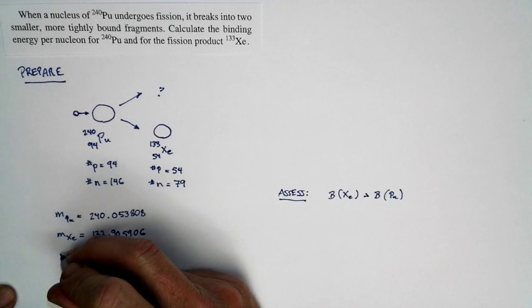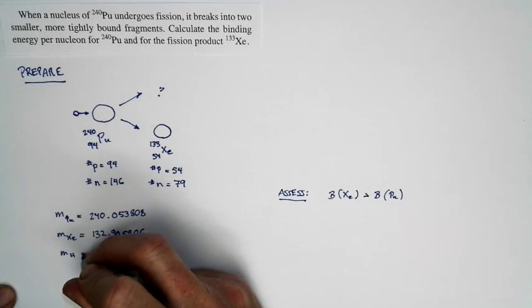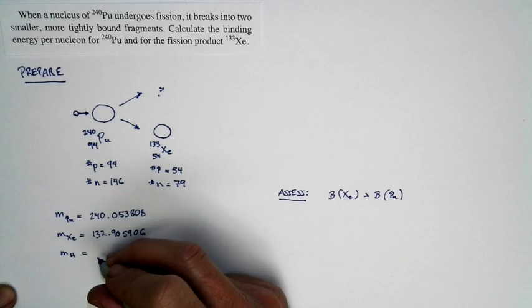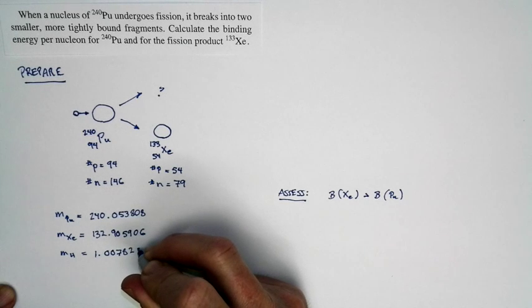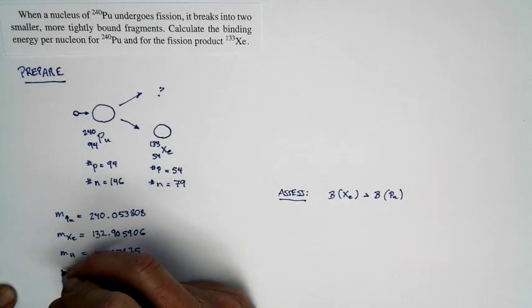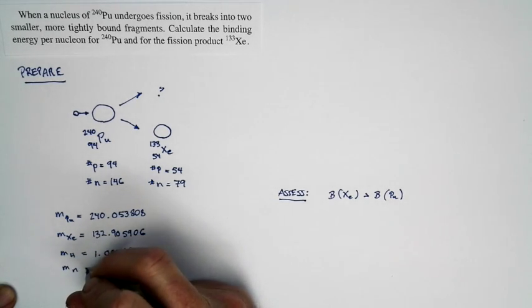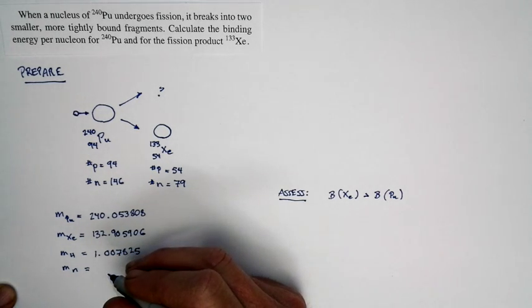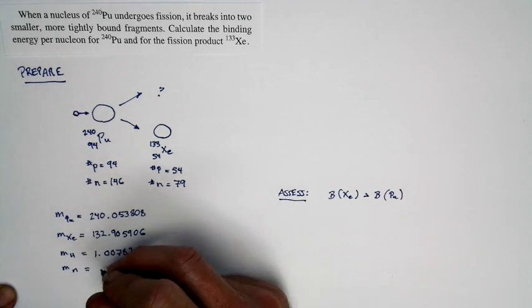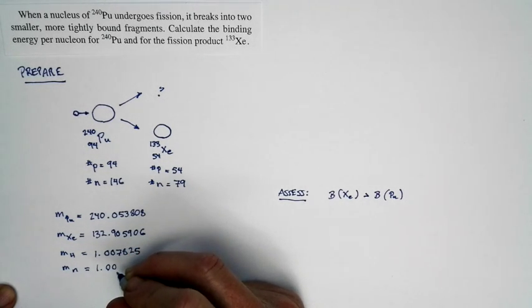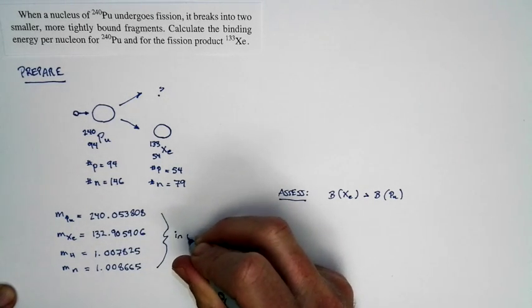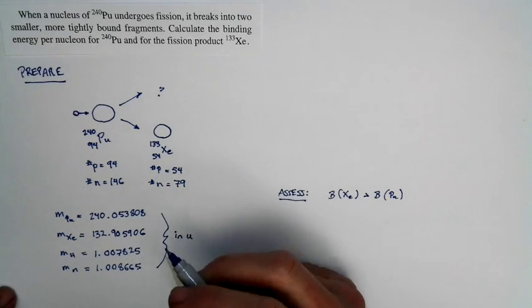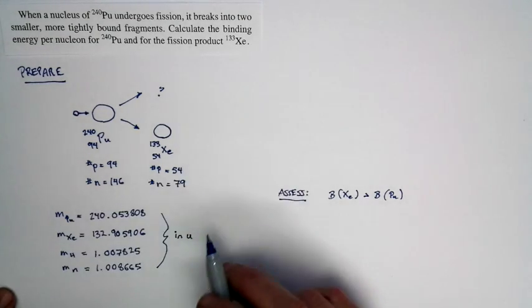We're also going to need to know the mass of a hydrogen atom. And the mass of the hydrogen atom is 1.007825. We also need to know the mass of a neutron. The mass of a neutron is 1.008665. And all of these masses are atomic mass units, in units of u. So here's our preparation. And now we're ready to do some solving.